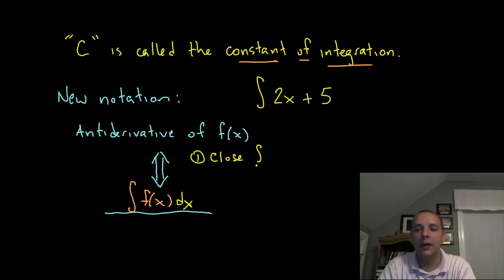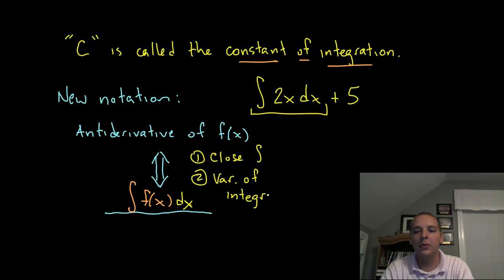One thing that this guy does is he closes the integral, that's a practical thing that he does. He stops where you're integrating. If you said the antiderivative of 2x dx plus 5, it's very clear to the reader we're only taking the antiderivative of 2x and then adding 5 to that answer. And number 2, another thing it does, this is more of its formal job, it's called the variable of integration. And again there's that word again, we haven't talked about that word but we will shortly.